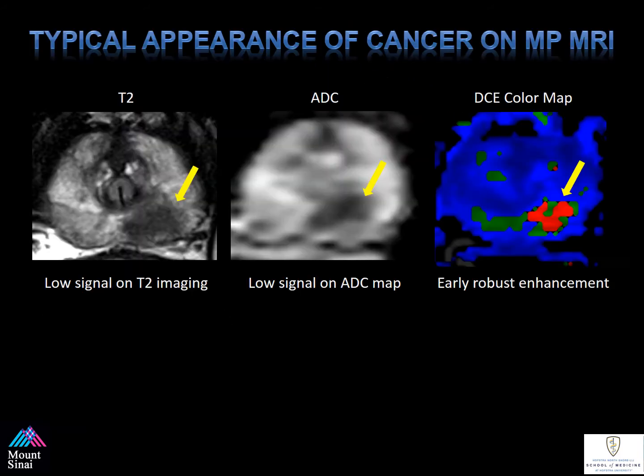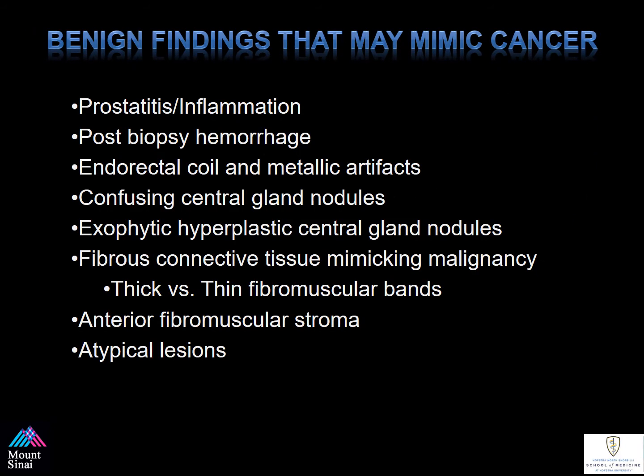The typical appearance of cancer on multi-parametric MRI is outlined by the yellow arrows as seen here. First, the T2 sequence shows low signal intensity on T2 imaging. The ADC map has a low signal, and post-contrast, or dynamic contrast enhanced MRI, shows early arterial enhancement using a color map. There are many benign findings that can mimic cancer, which we'll cover in the upcoming talk.